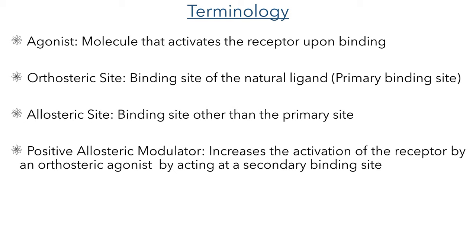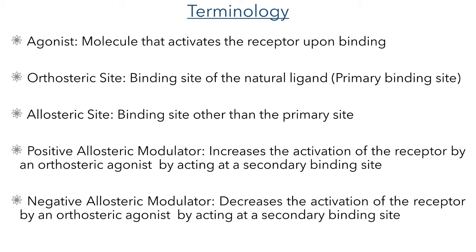Allosteric sites are binding sites in the receptor other than the primary orthosteric site. Allosteric modulators change the activation of the receptor relative to orthosteric agonists by binding at an allosteric site. A positive allosteric modulator will increase the activation when a ligand binds at the orthosteric site, whereas a negative allosteric modulator will decrease the activation when an orthosteric agonist binds to the receptor.